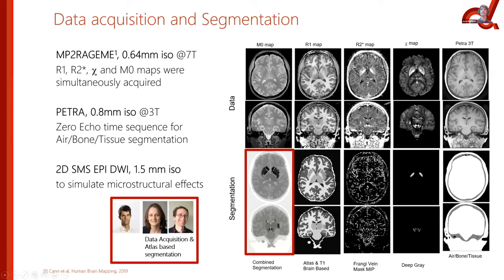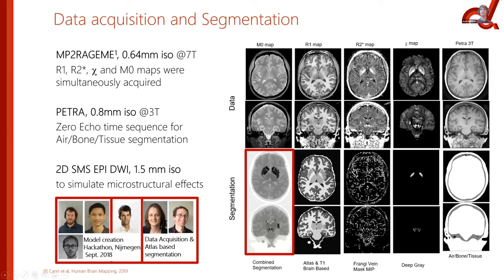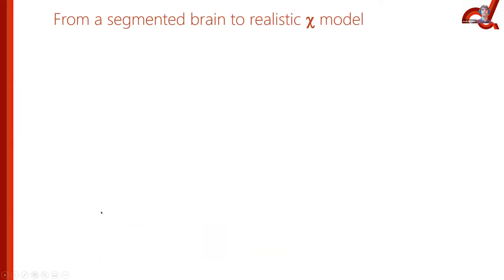This was done at two stages. Data acquisition was performed in Amsterdam with our colleagues from the Spinoza Centre. Then we had a hackathon in Nijmegen where we met physically and spent two days getting the segmentation and simulations right.